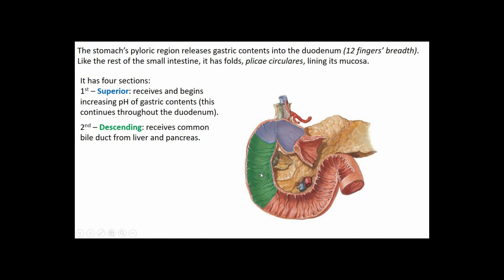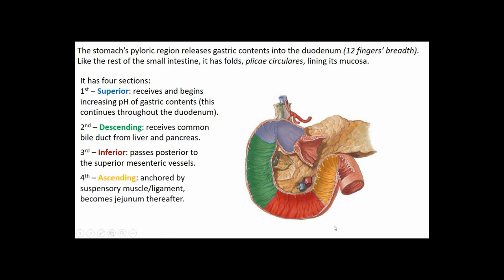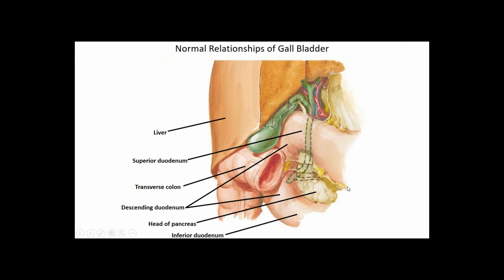The inferior duodenum has the superior mesenteric vessels passing immediately anterior to it, and it can sometimes be compressed by traction of the midgut down across it. Then there's the ascending duodenum, the fourth part, anchored by the ligament or muscle of Treitz, after which it becomes the jejunum. The duodenum's relationship to the gallbladder and liver is important: the liver has a large right lobe, smaller left lobe, and much smaller quadrate and caudate lobes, with the gallbladder on its inferior surface fairly anteriorly.